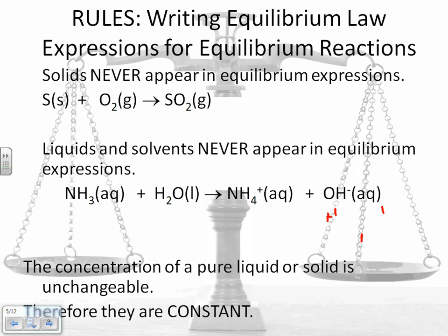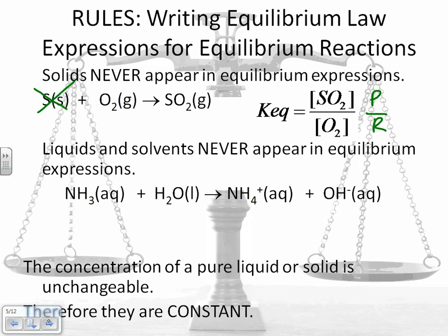So let's go through the first example. S plus O2 gives you SO2. If I were to write the equilibrium expression for that reaction, it would look like this. I've done products divided by reactants, but I've eliminated my sulfur as a solid because there's no concentration for that. There's no value for concentration. So it ends up being your concentration of SO2 divided by your concentration for O2, and they're built to the exponent 1.